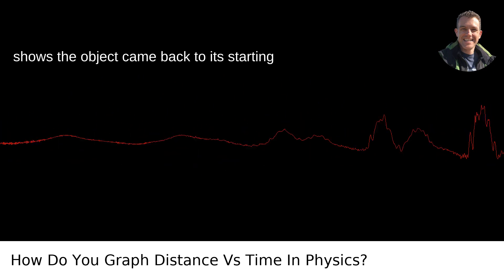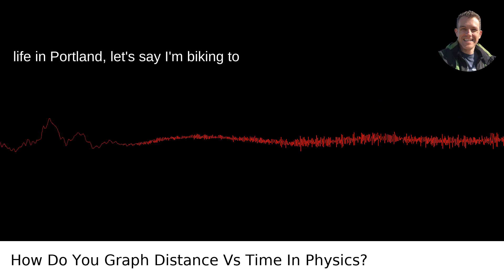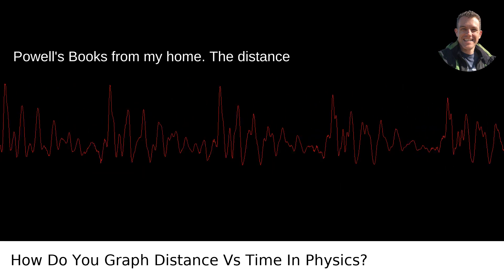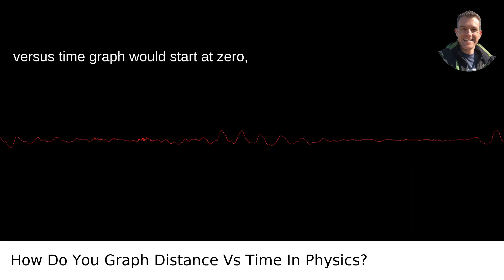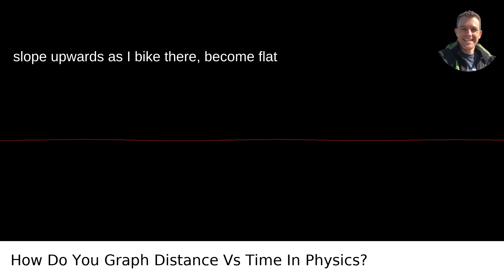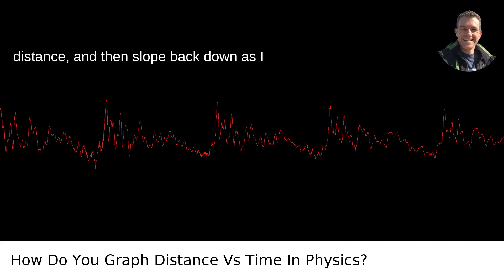A line that returns to zero shows the object came back to its starting point. For a real-world example from my life in Portland, let's say I'm biking to Powell's books from my home. The distance versus time graph would start at zero, slope upwards as I bike there, become flat as I browse the shelves (time is increasing but I'm not covering any distance), and then slope back down as I return home.